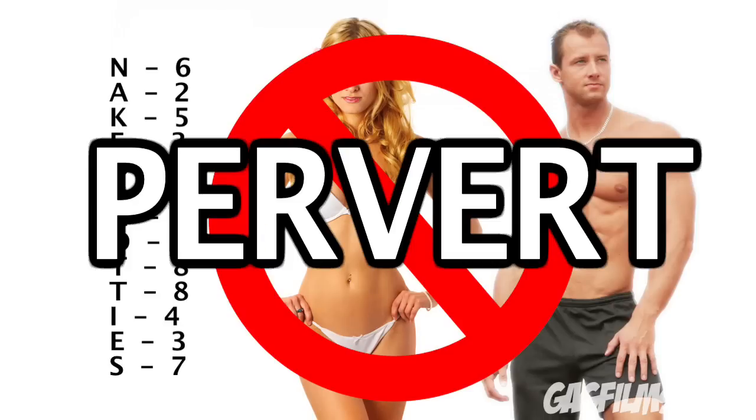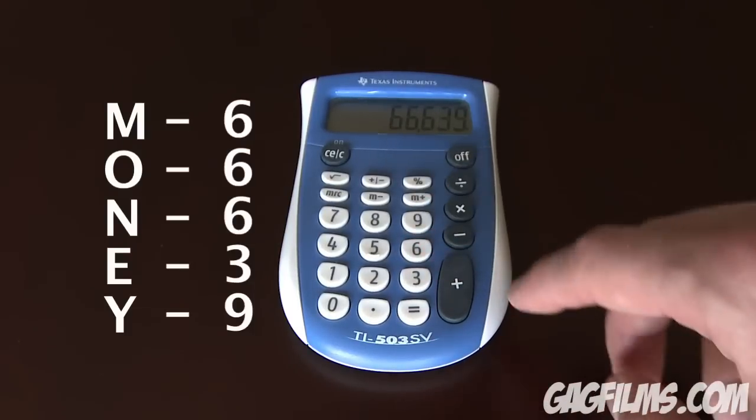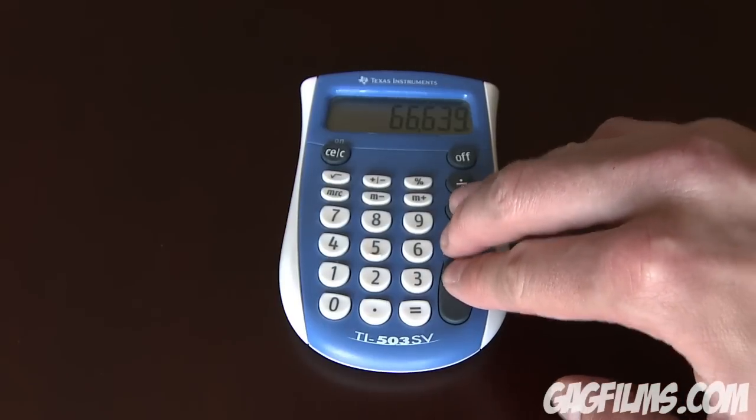We want to type in the word money, and that would end up being 6-6-6-3-9. Go ahead and type that number in, and then press plus, minus, and multiply buttons at the same time.